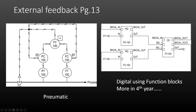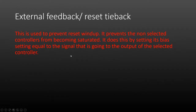With external feedback, the output from the selector goes to the control element and also to the non-selected controller. So if it's putting out 50% and the valve is half open, it sends the feedback signal to the selected controller at 50% and also sends the control signal to the non-selected controller at 50%. The external feedback or reset tieback is used to prevent reset windup.